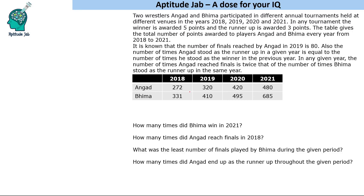The table gives the total number of points awarded to these players during this period. The conditions are: the number of finals reached by Angad in 2019 is 80; the number of times Angad stood as runner-up in a given year equals the number of times he was winner in the previous year; and in any given year, the number of times Angad reached finals is twice the number of times Bhim stood as runner-up in the same year.